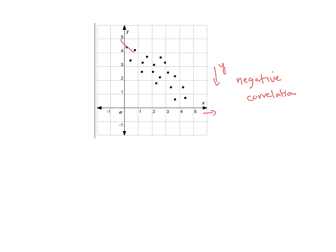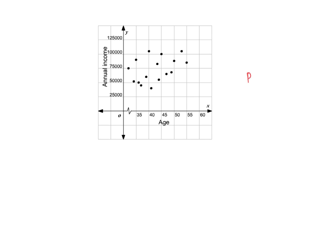If I were drawing it I'd draw it through the middle. I didn't hit many points but my points are distributed equally above and below — about the same number above as below. The next scatter plot has a positive correlation, though not a great one. It looks like as age increases, annual income is also increasing, with some outliers. I'd put my line of best fit here — hitting maybe four points but with points distributed above and below fairly equally. There is a positive correlation because as you get older you generally make more money.